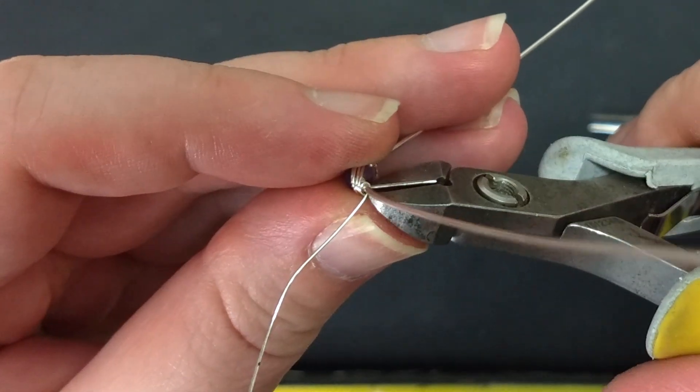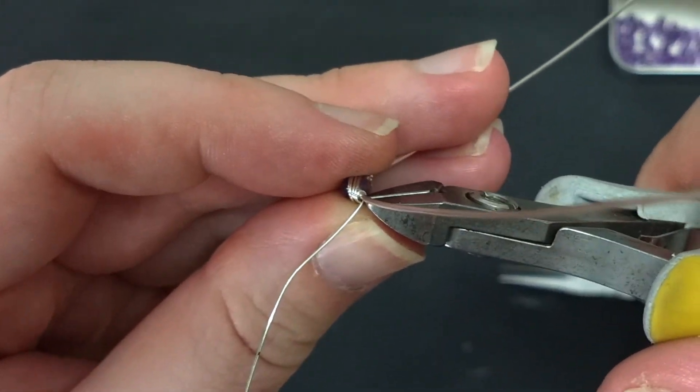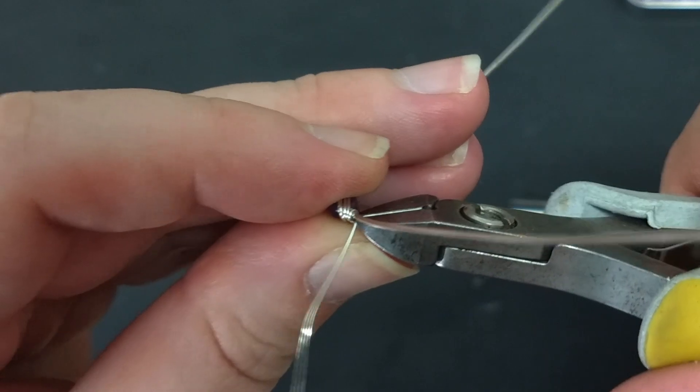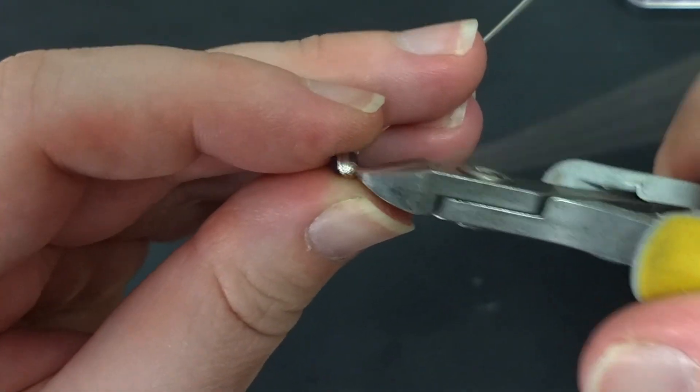End the wrap by looping the wire twice around the 20 gauge wire and trimming the tail and tucking in the end with the chain nose pliers.